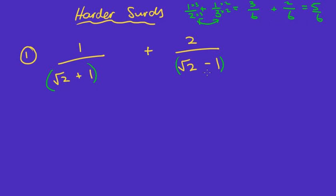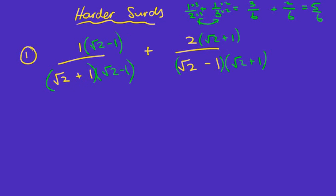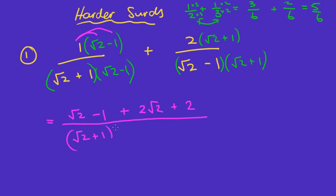That same principle will apply for this particular question. Although we're using SIRDs, it looks more challenging. I'm going to put brackets around there because it's going to make things easier. So for the common denominator — if all else fails, you times the two bottoms together. So I'm going to do root two plus one times root two minus one. What you might notice is that's actually creating, for this particular question, a difference of two squares. But in order to times the bottom by root two minus one, I need to times the top by root two minus one. Likewise, I'm going to multiply this side by root two plus one and the top by root two plus one. I like to put brackets around because it reminds me to multiply whatever's inside the brackets by both things outside.